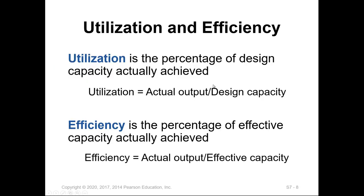Based on the definitions of both design capacity and effective capacity, we can define and calculate utilization and efficiency of machines in the factory. Utilization is the percent of design capacity achieved, equal to actual output divided by design capacity. Efficiency is the percent of effective capacity achieved, equal to actual output divided by effective capacity.